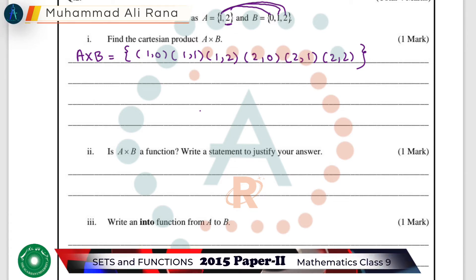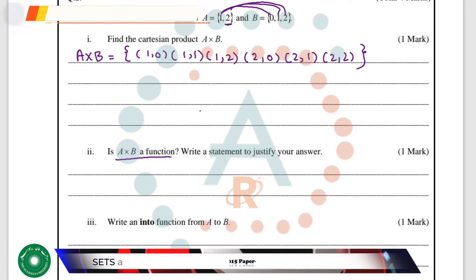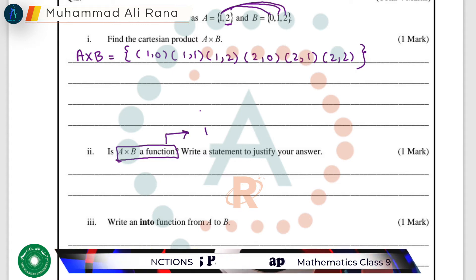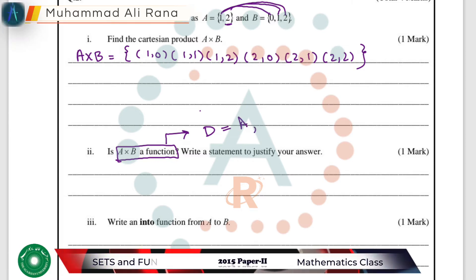In part two, we have to identify whether this A cross B is a function or not. For a function, we know that the domain should be equal to A, and the domain should not be repeated.